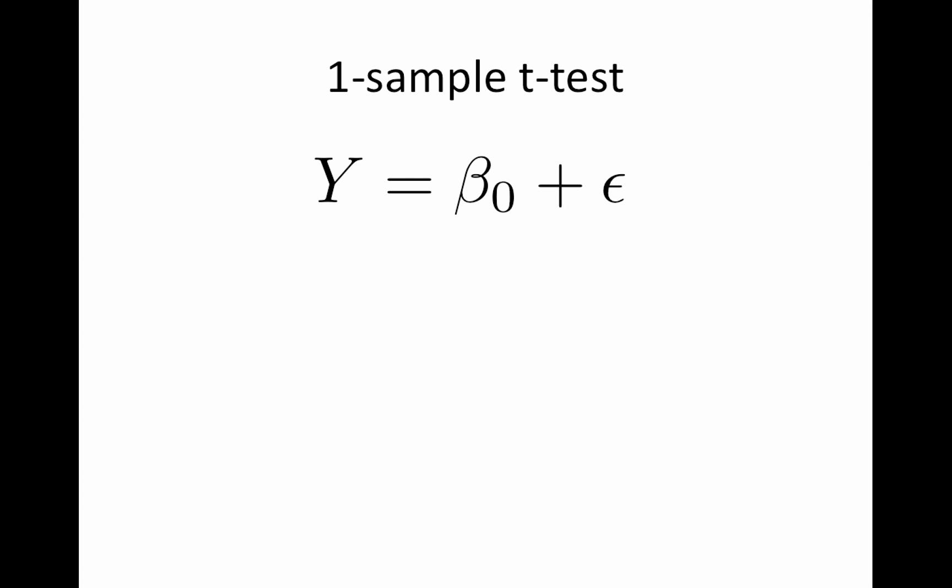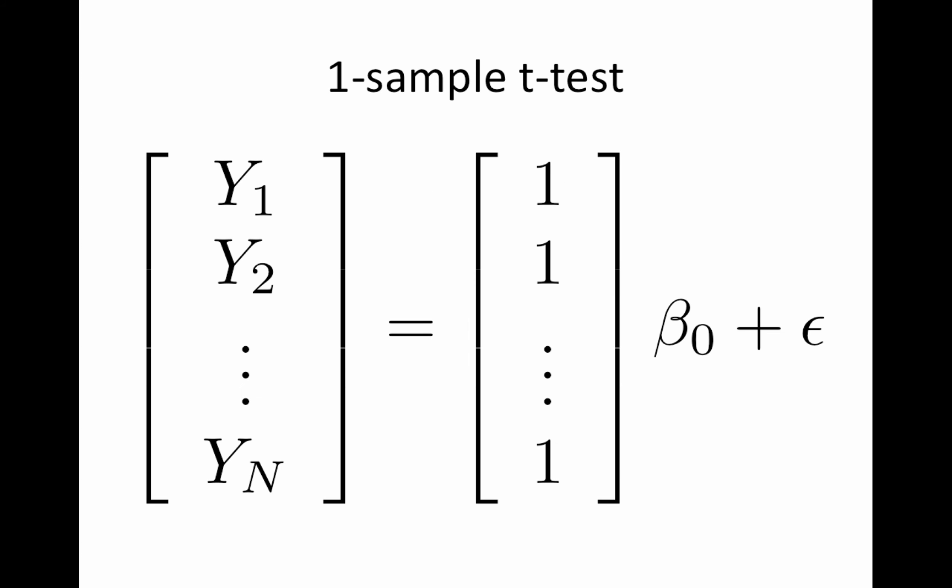Okay, so this is the one sample t-test. It is the simplest model you could possibly have for a GLM. It's just y equals beta naught plus epsilon. If I write this out, where y1 through yn are, for example, bold activation estimates in a single voxel for each of n subjects and we just want the mean bold activation, this is the model you would use. The design matrix is a single column of ones and then we have a single parameter beta naught and then the error term.